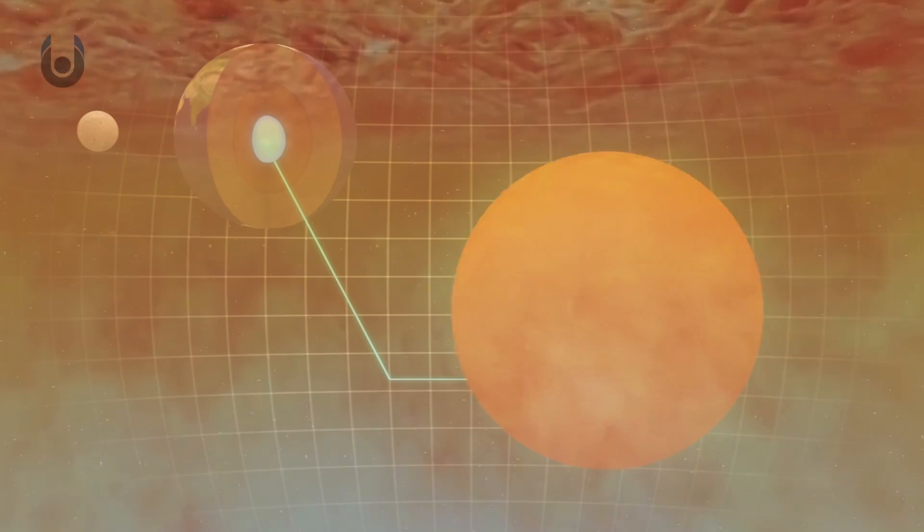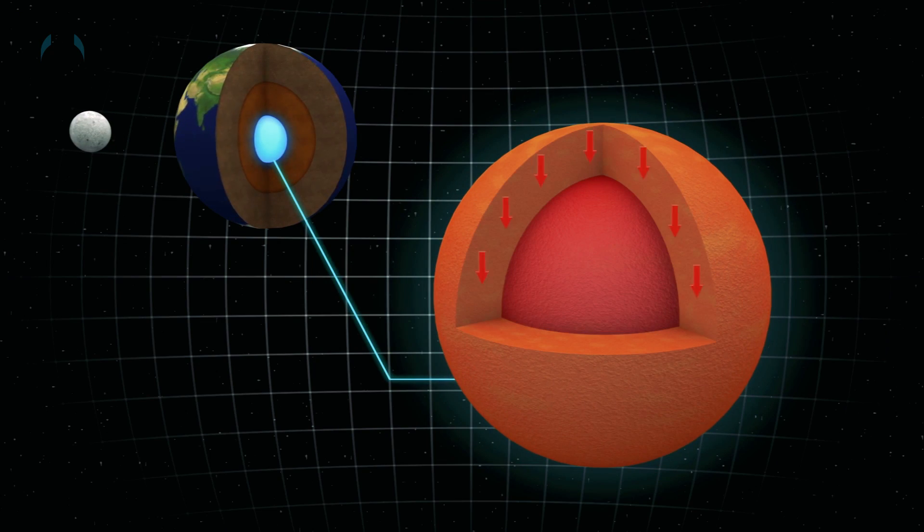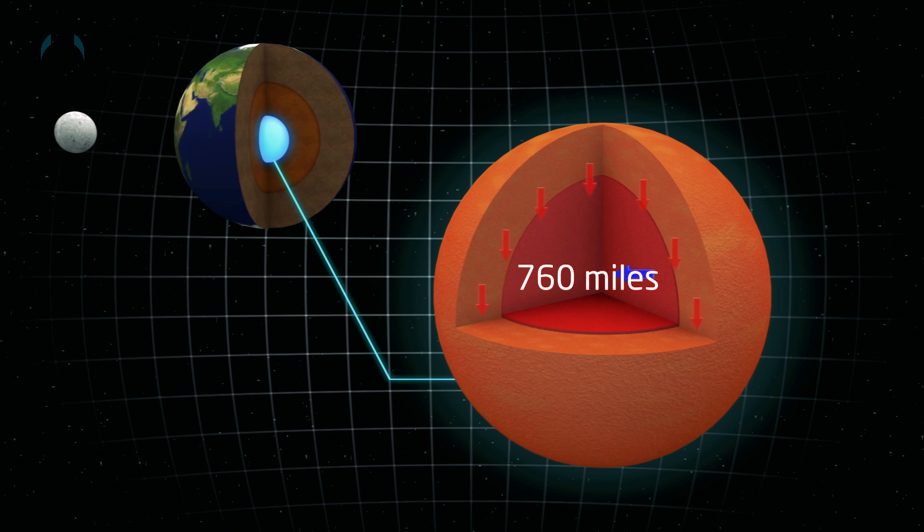If somehow you survived being incinerated at this point, you would reach the earth's inner core. The inner core extends another 900 miles towards the center of the earth. The diameter of the inner core is estimated to be 760 miles thick and is growing by 1 mm per year.